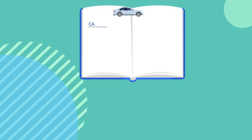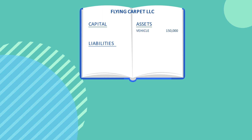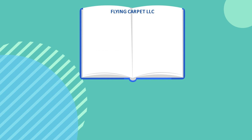We will now summarize using Flying Carpet LLC's books of accounts. Fleet of cars purchased are the assets as they generate revenue to the company. Mitchell's personal savings invested in Flying Carpet LLC is the capital or equity. Long-term loan obtained from the bank is the liability, which needs to be repaid. Revenue generated by renting out cars is accounted as income for the business.